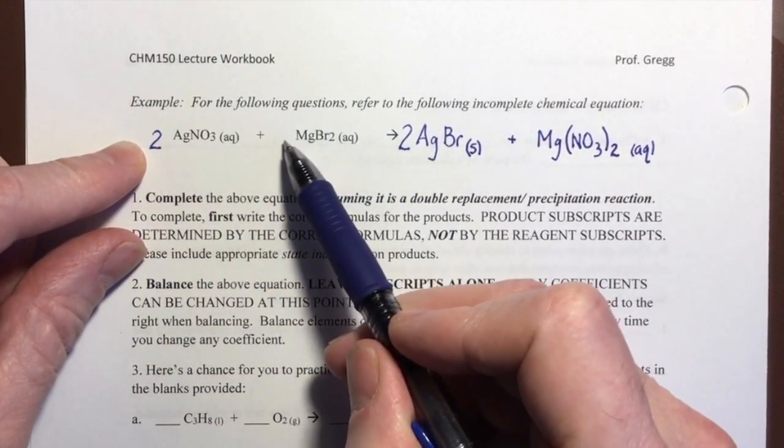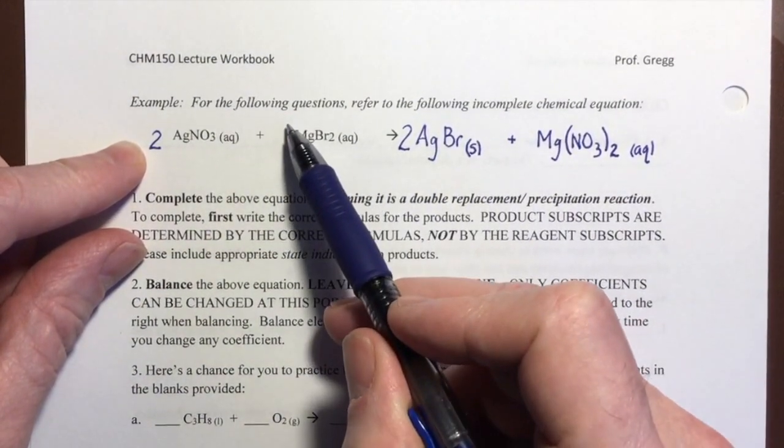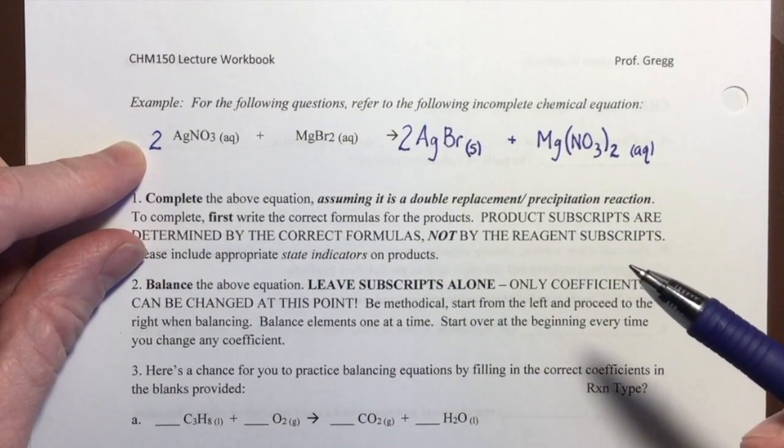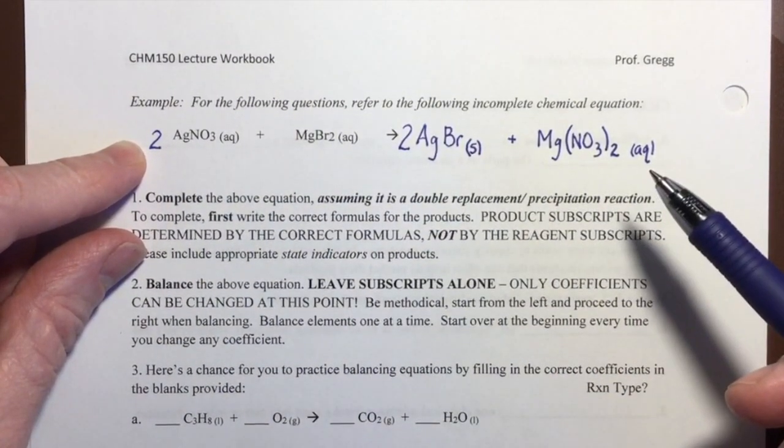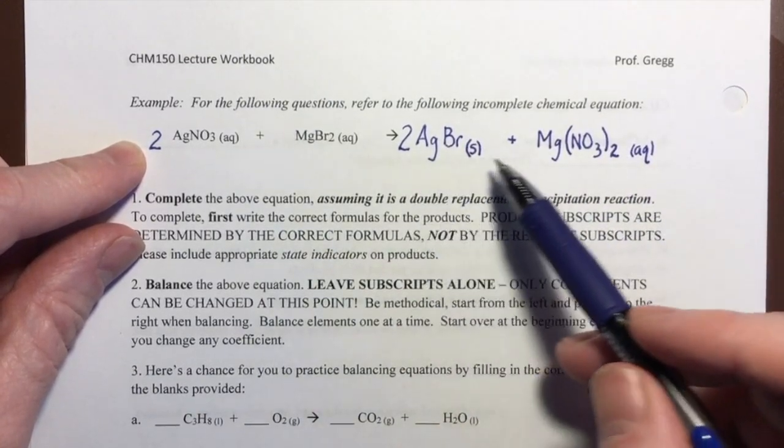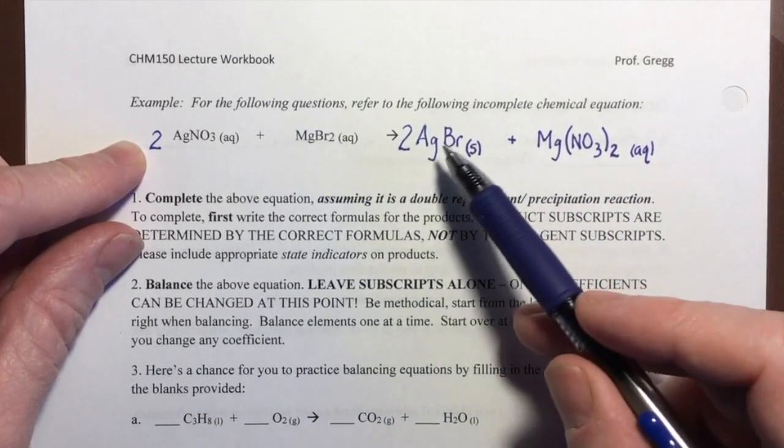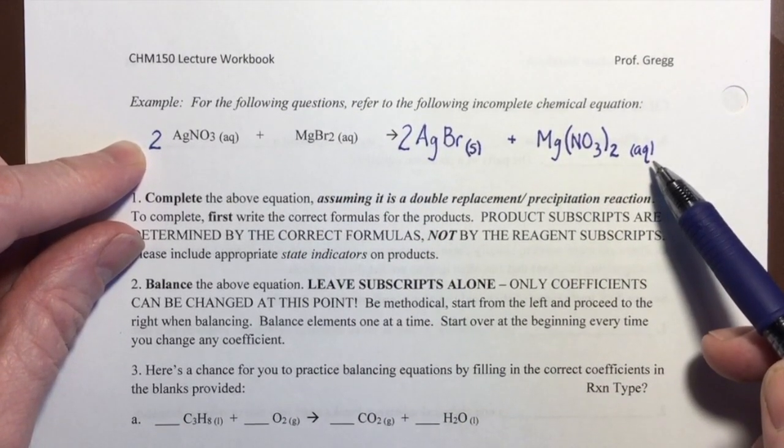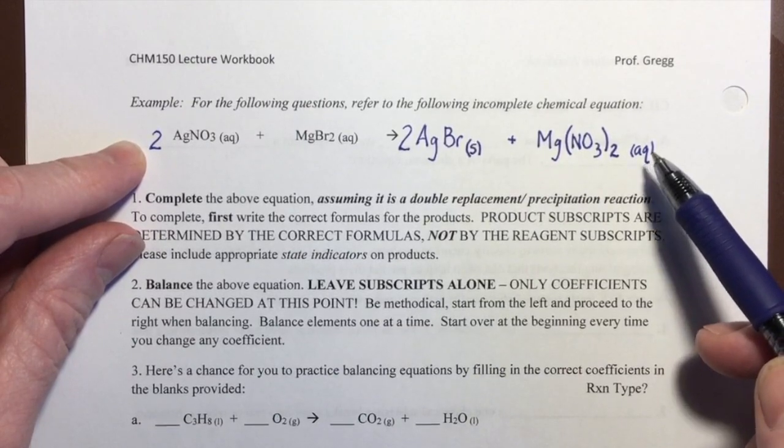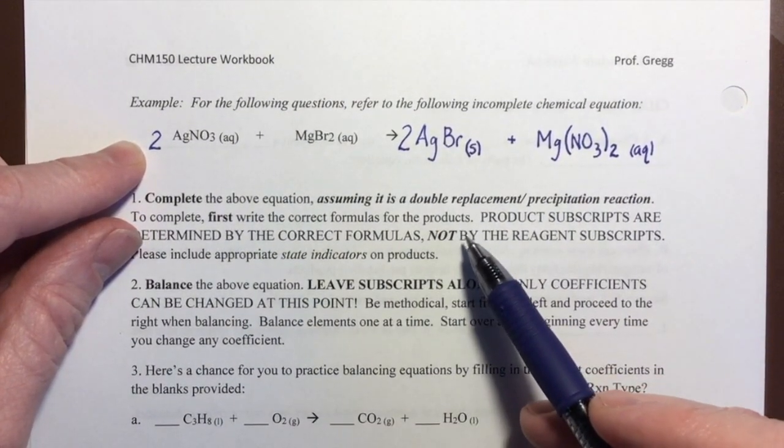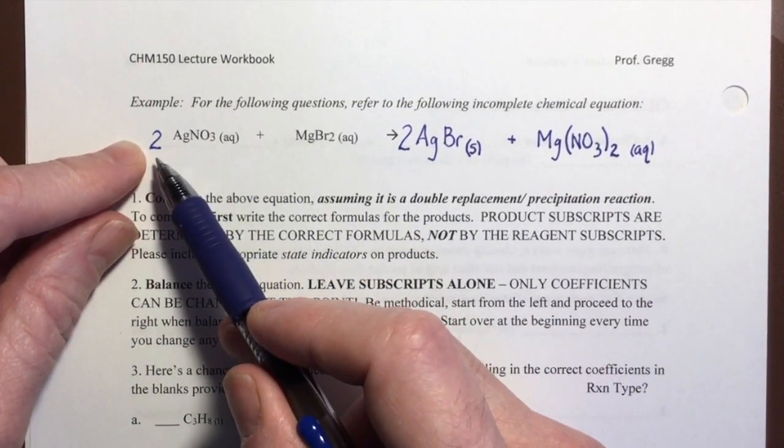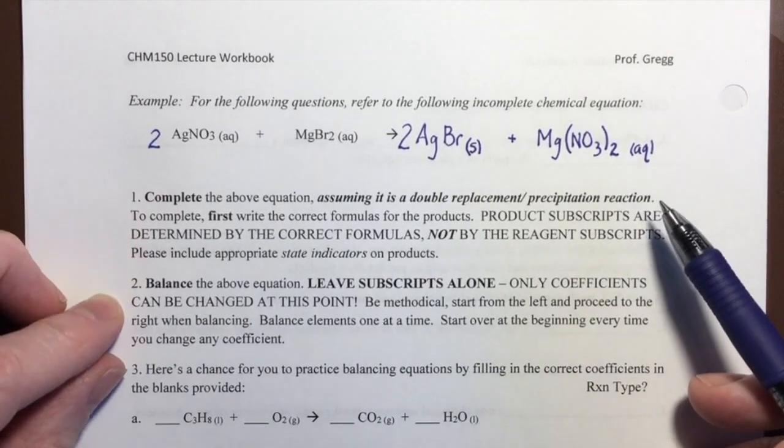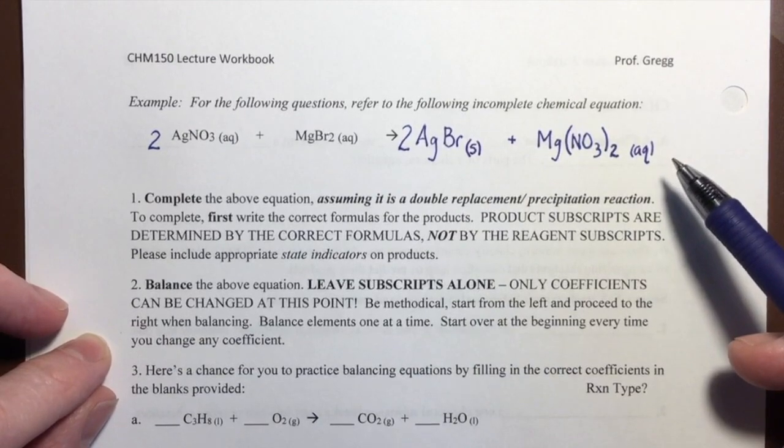Notice that I did not change the coefficient in front of these two species because that is understood to be a one. And they are fine as ones. And everything works out. So there I have completed a chemical reaction with the correct formulas, with the correct state indicators. And we'll talk more about that later when we get into solubility. And then after I had the correct product formulas, then and only then could I go about balancing the equation. So that's basically how we balance the equations.